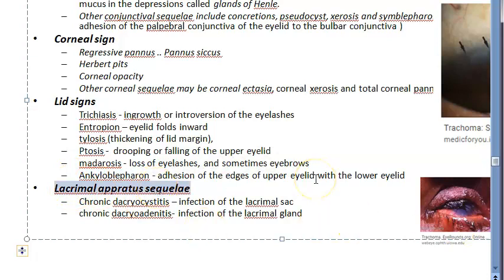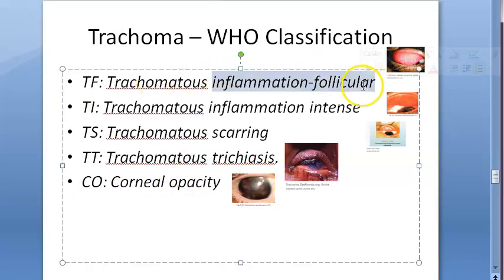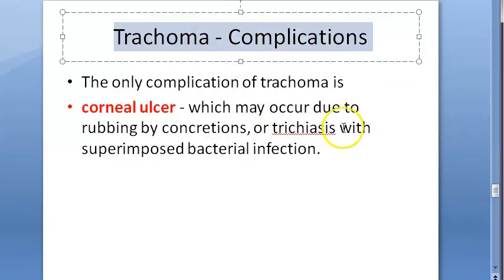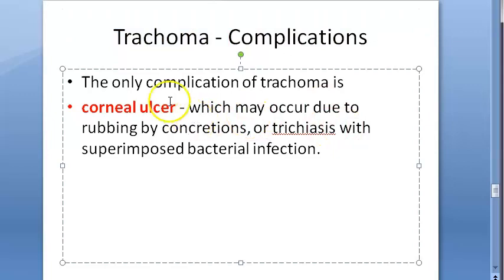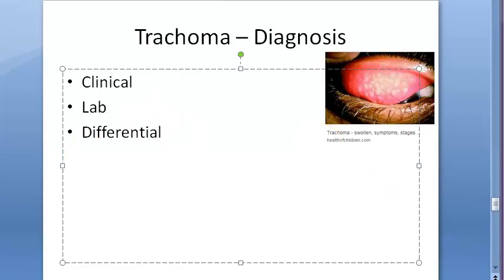The lacrimal apparatus shows dacryocystitis and dacryoadenitis. The WHO classification includes five stages: follicular, intense, scarring, trichiasis, and corneal opacity - the FISTO classification. Complications include corneal ulcer.